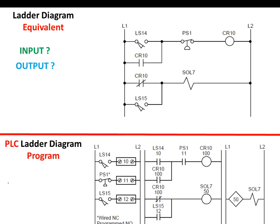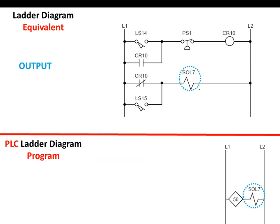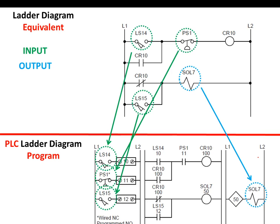Here is what makes the difference between the relay logic ladder diagram and the PLC ladder diagram program. All the actual inputs have been transferred to the outside of the ladder diagram, as well as all the outputs have been taken outside. So we are left with a pure program in our PLC ladder diagram — there are no actual components inside it.